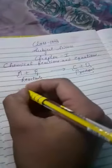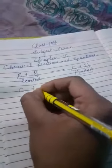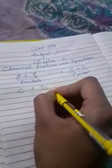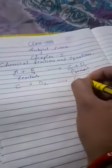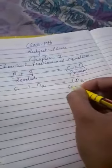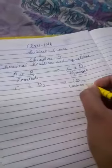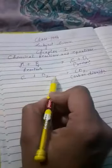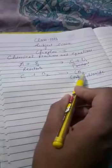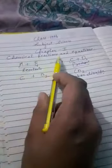Suppose we take carbon plus oxygen. Carbon and oxygen are reactants. This will react to form CO2, that is carbon dioxide. When carbon and oxygen react to form carbon dioxide, this is called chemical reaction.